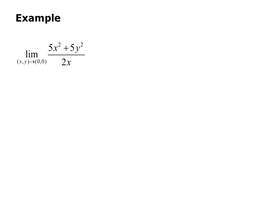So here's our example, the limit as x, y approaches 0, 0 of 5x squared plus 5y squared over 2x. Now notice that if I plug in the point, it's 0, 0, and I cannot simplify, so I try polar.